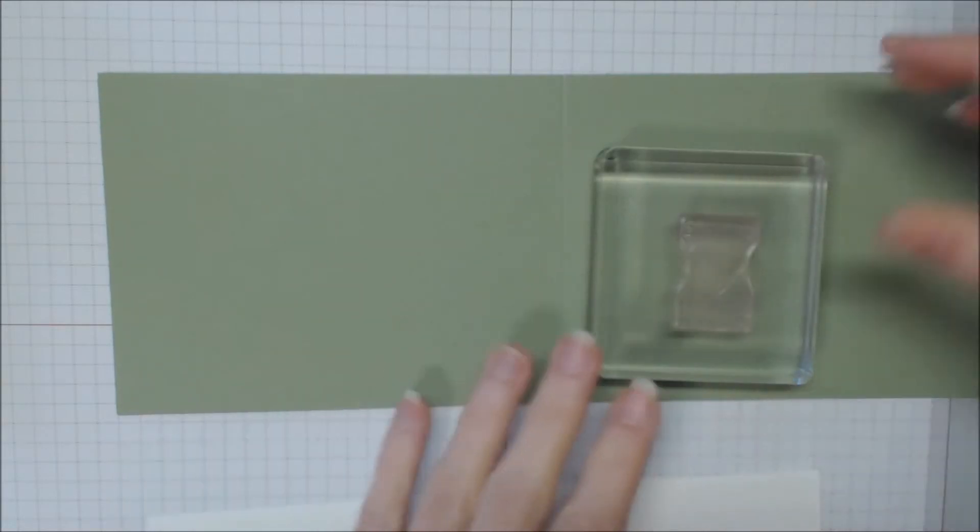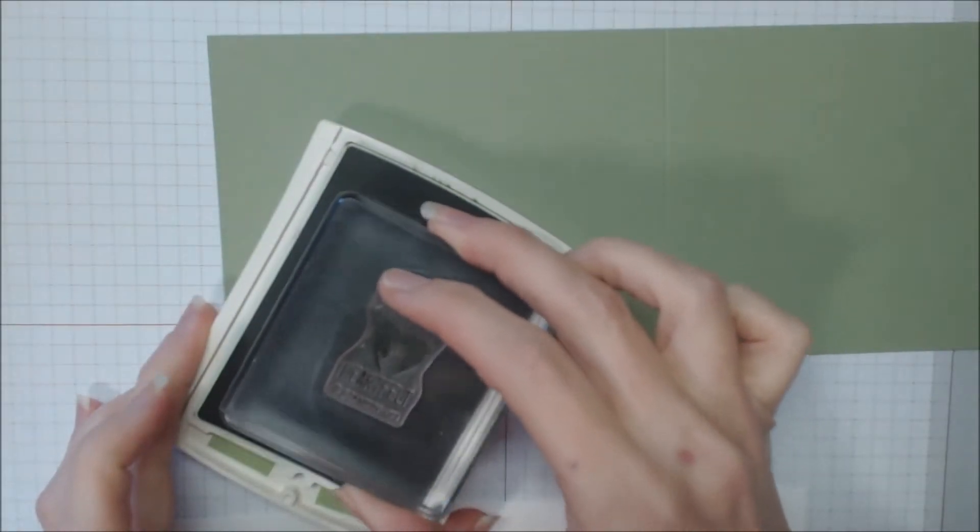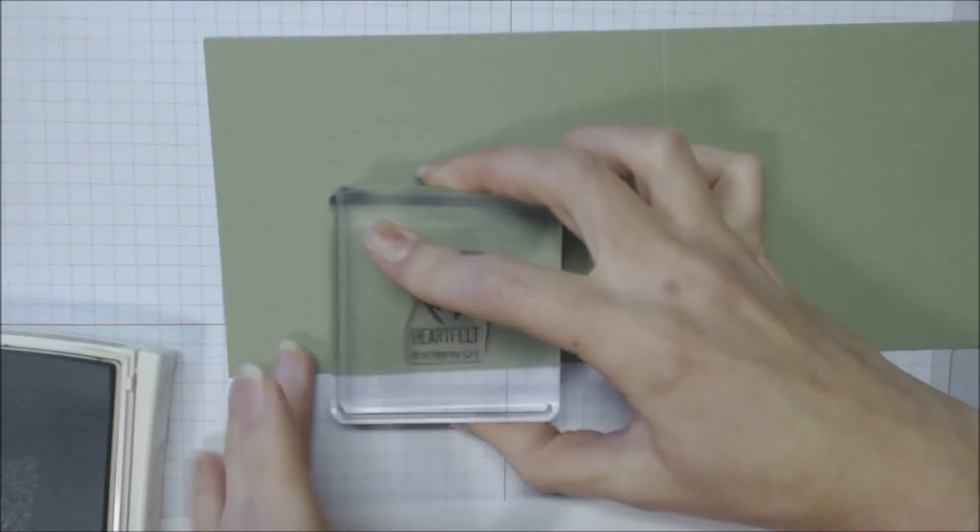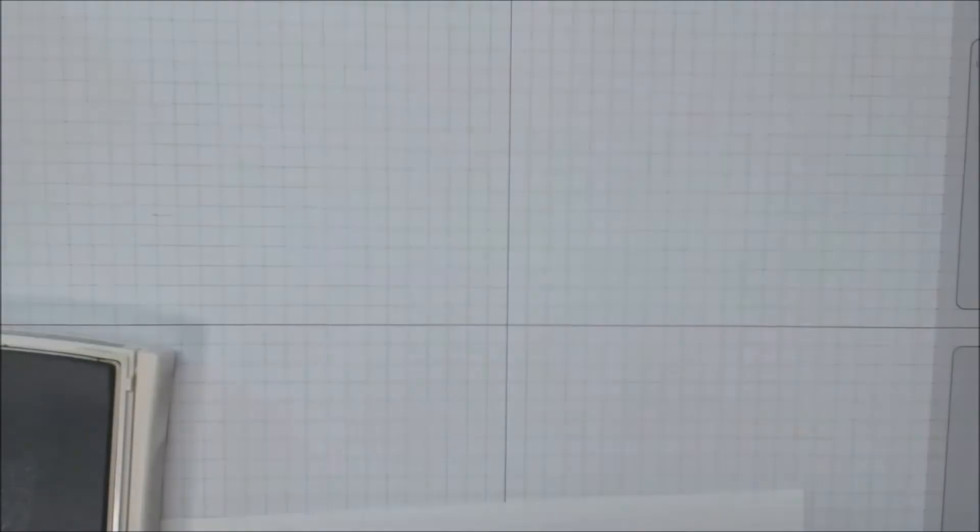To begin the creation of this card, we're going to stamp Handmade Heartfelt from the Better Than Email stamp set onto a Wild Wasabi card base. We're going to ink that up with Wild Wasabi ink and stamp that on the back of the card and set that aside.